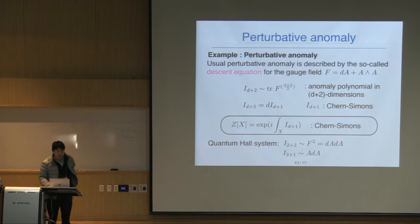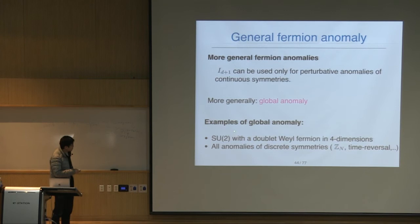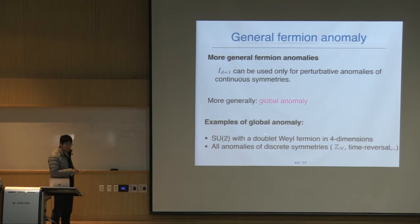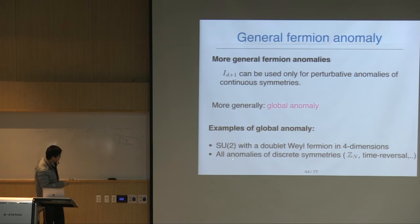In the case of the quantum Hall system, D=2, so D+2=4, and the polynomial is F², from which we descend to three dimensions to get the Chern-Simons term. This Chern-Simons action can be used only for part of the anomalies of continuous symmetries. More generally, we can have global anomalies.